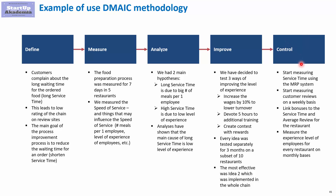In the Control stage, we first start measuring service time automatically, for example using our ERP system. We also check customer reviews on a weekly basis to see how they are trending. Bonuses are linked to service time and the average review for each specific restaurant. Additionally, we measure the experience level of employees for every restaurant on a monthly basis and treat this as a leading indicator of service time and average review — because in the analysis phase we established the link between experience level and service time. So if experience level goes down, service time goes up and reviews go down, meaning we can control end results by monitoring experience ahead of time.